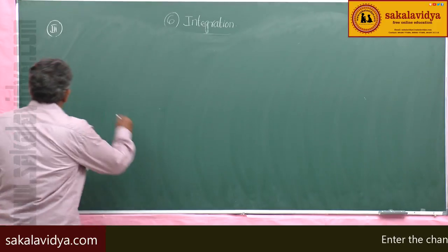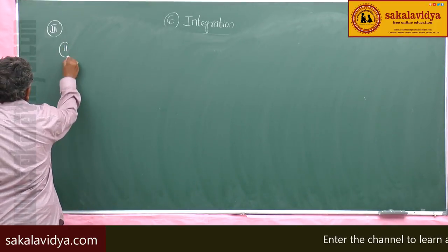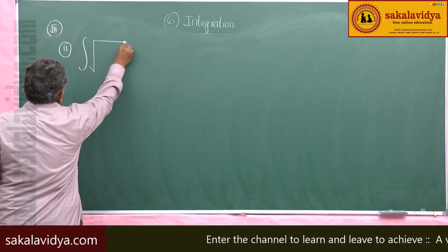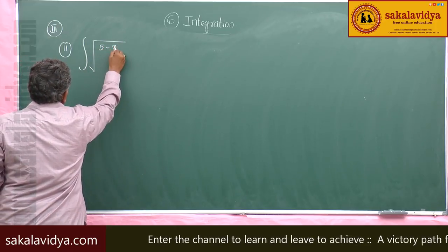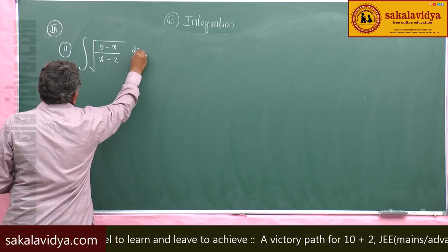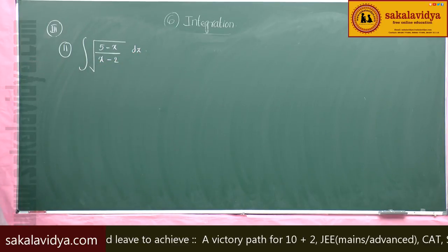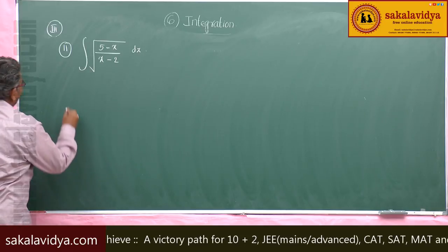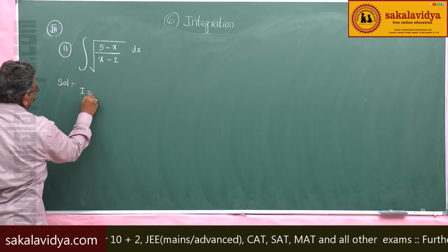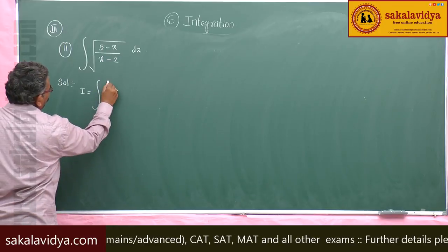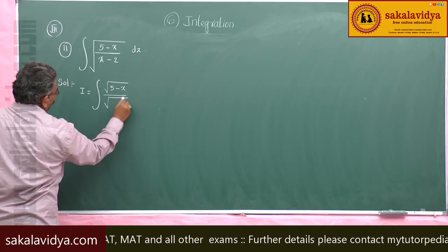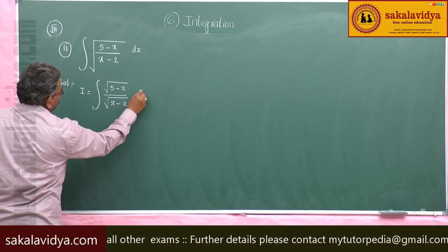11th problem. Evaluate integral of root of (5 minus x) by (x minus 2) dx. Solution: I is equal to integral of root (5 minus x) by root (x minus 2) dx.